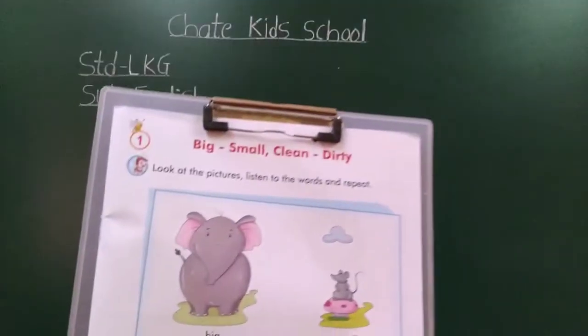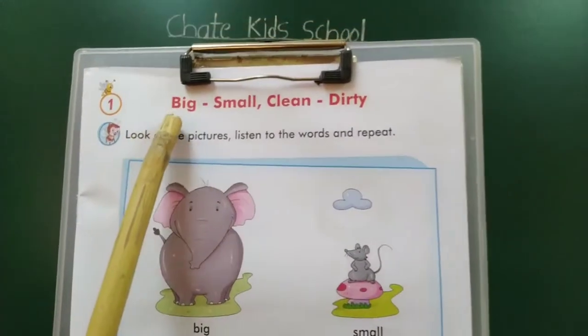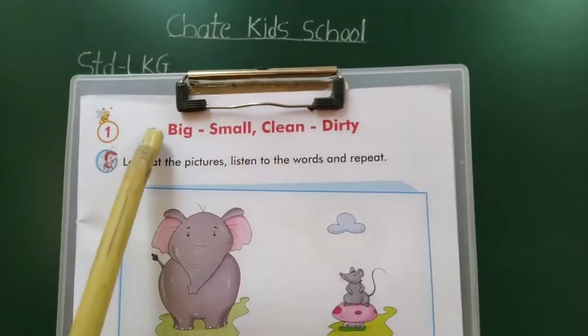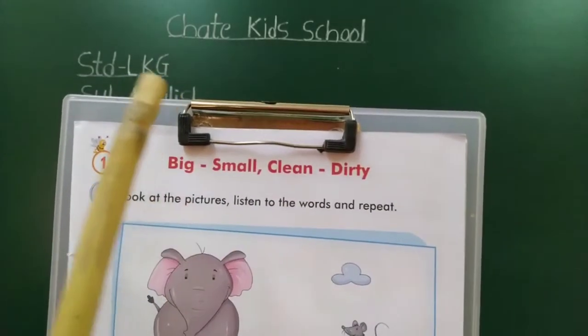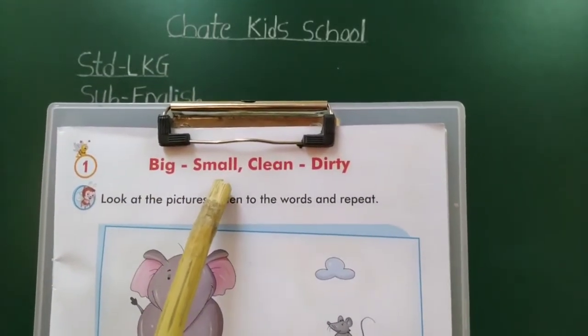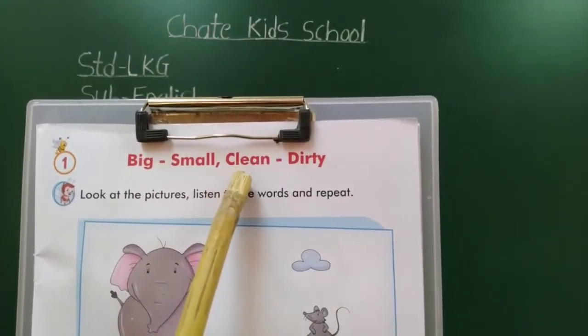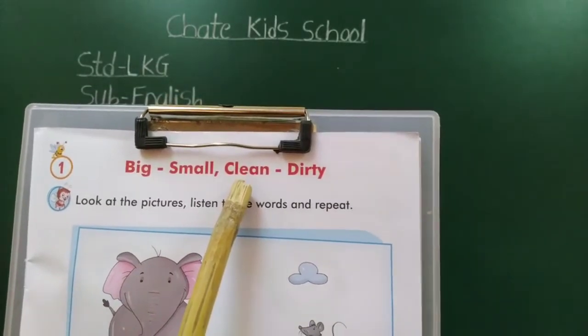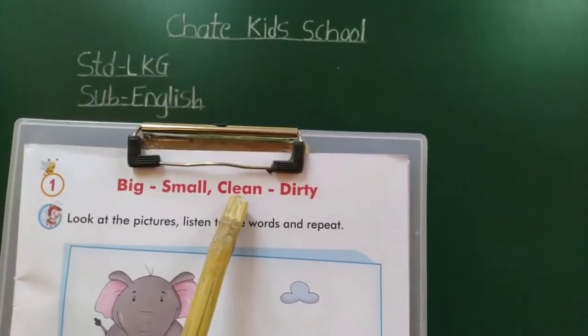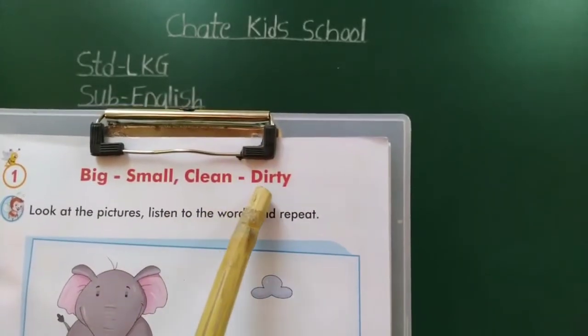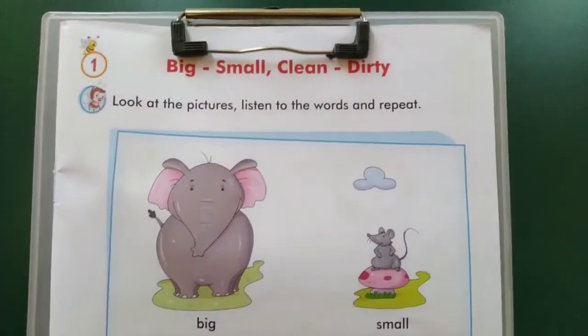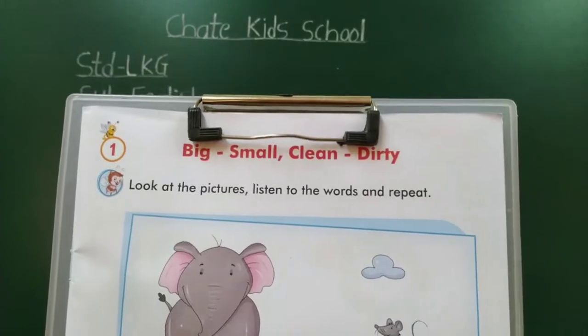Open page. First lesson — what is it? Yes: big, small, clean, dirty. Big means motha (large). S-M-A-double-L, small means lahan (little). C-L-E-A-N, clean means swach (neat). D-I-R-T-Y, dirty means ghan — when you play in mud and get dirty, that is dirty.